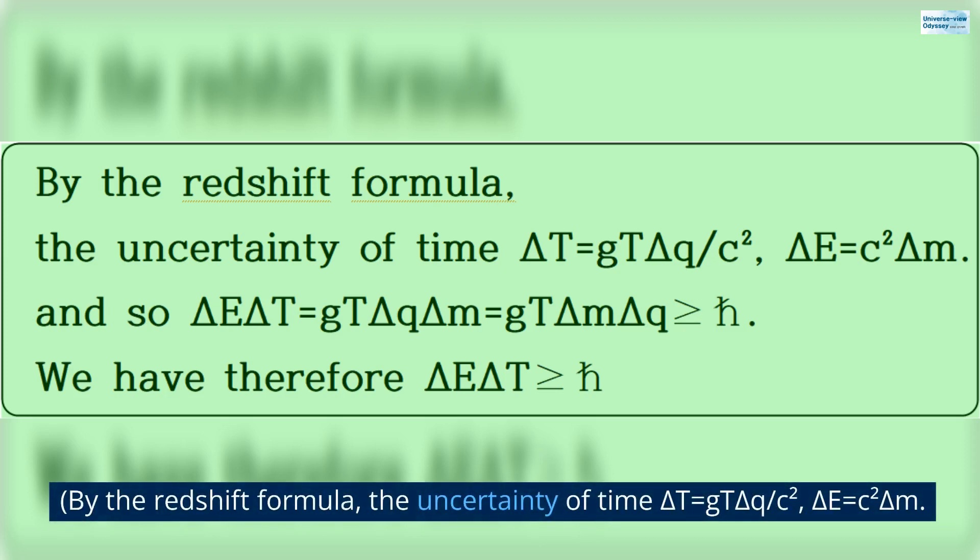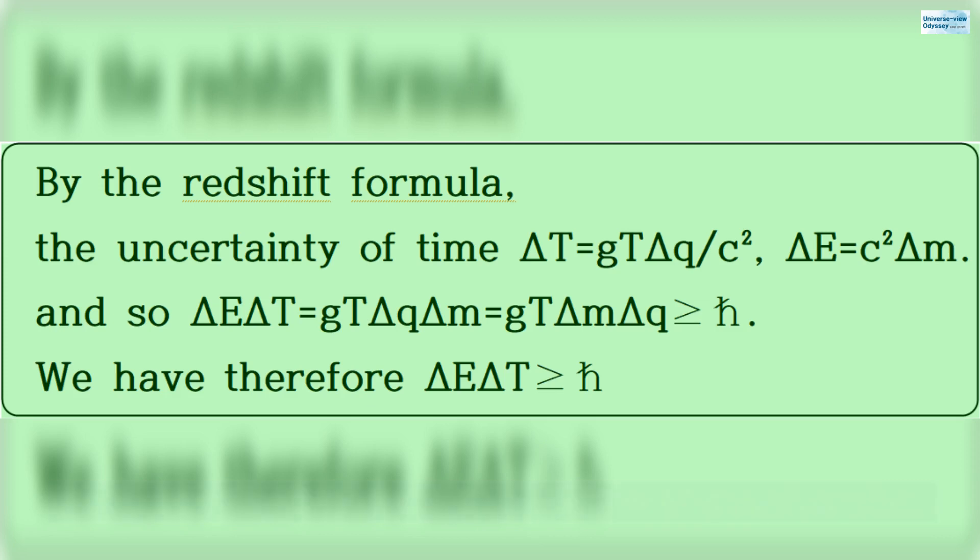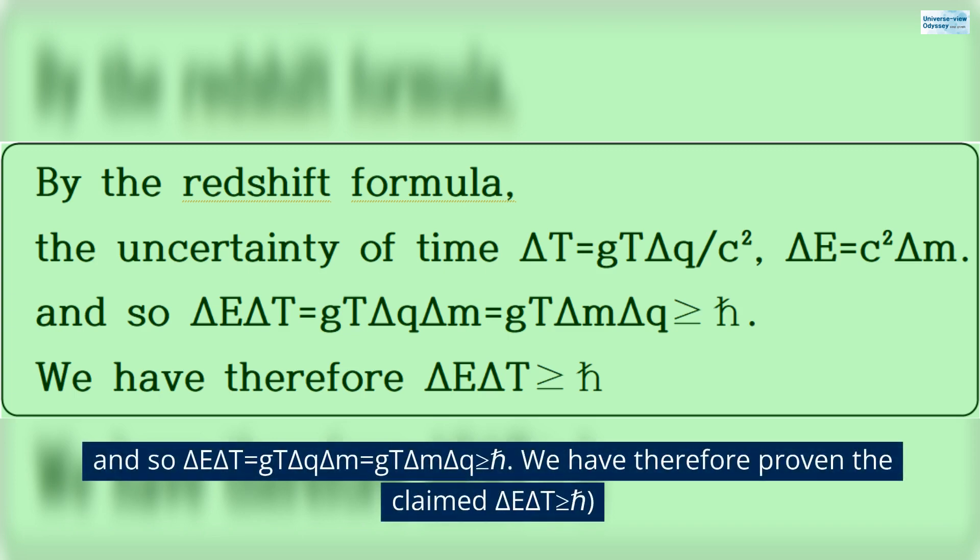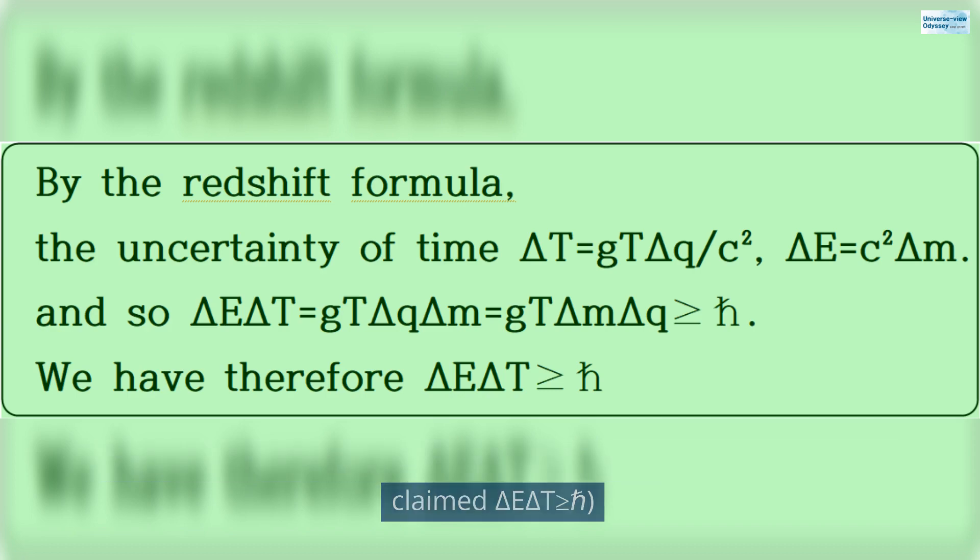By the redshift formula, the uncertainty of time delta T equals G T delta Q over C squared, delta E equals C squared delta M. And so delta E delta T equals G T delta Q delta M equals G T delta M delta Q is greater than or equal to H. We have therefore proven the claimed delta E delta T is greater than or equal to H.